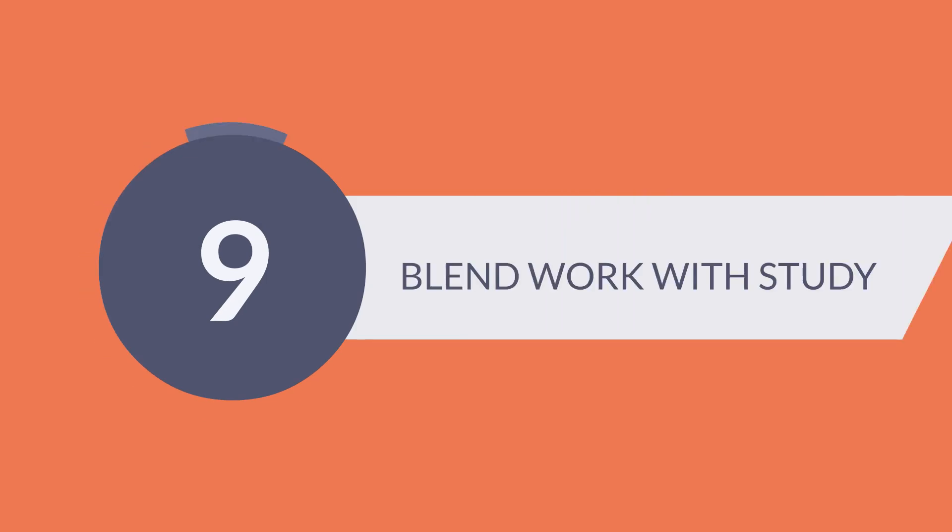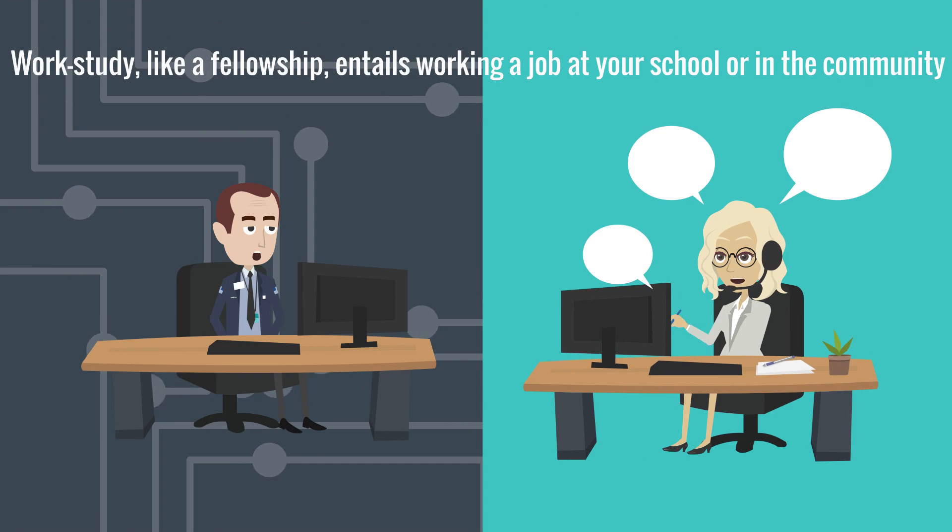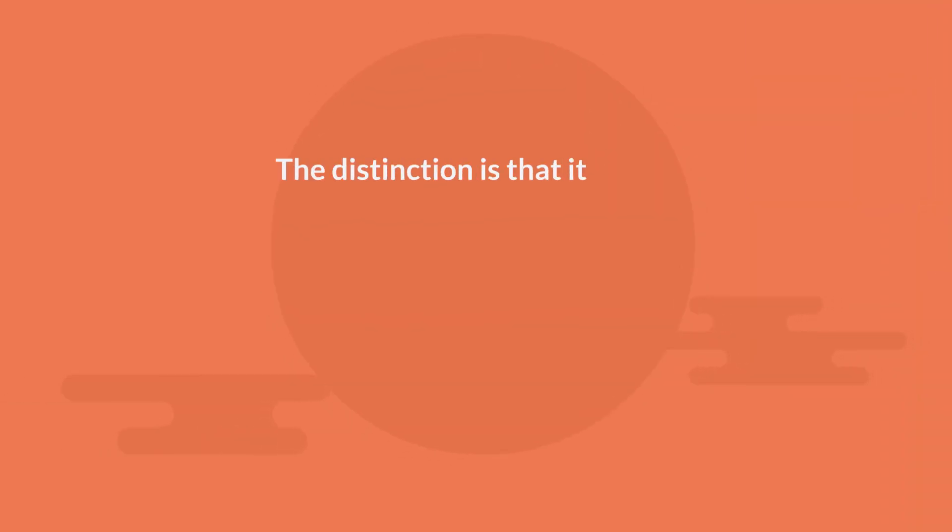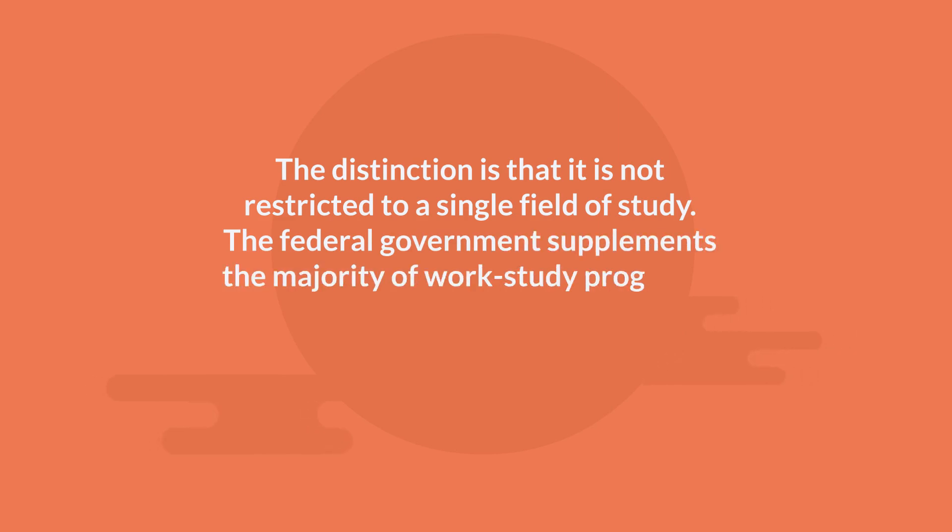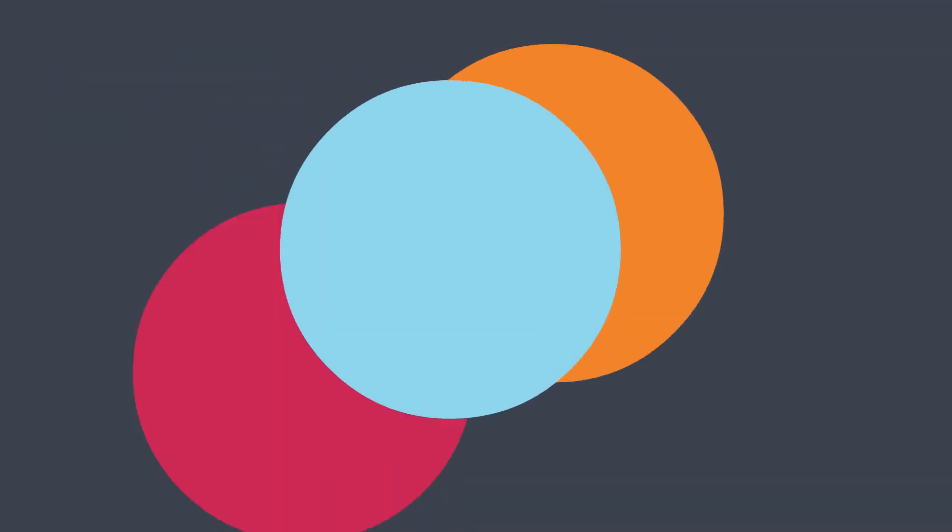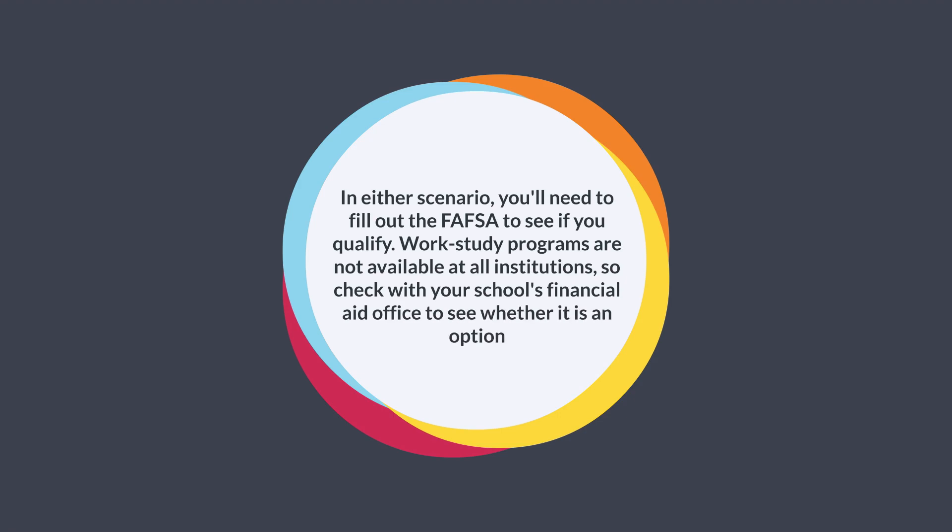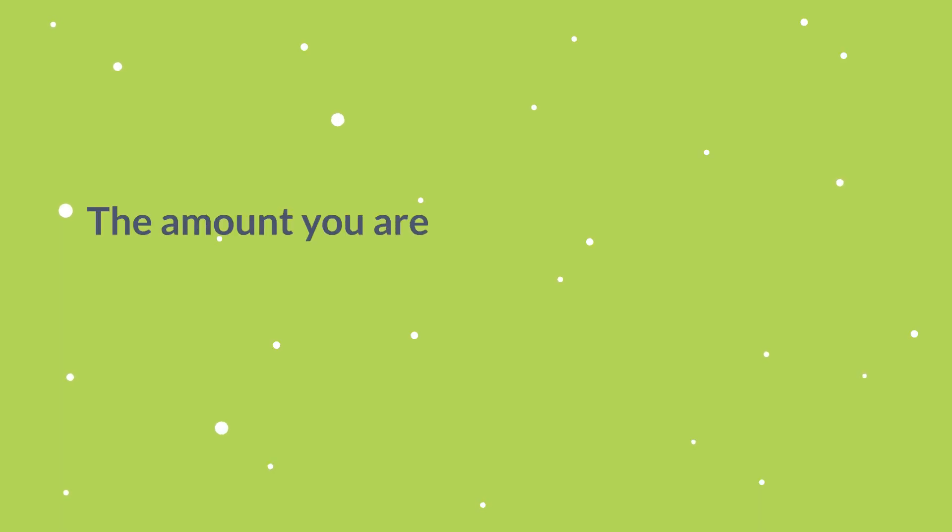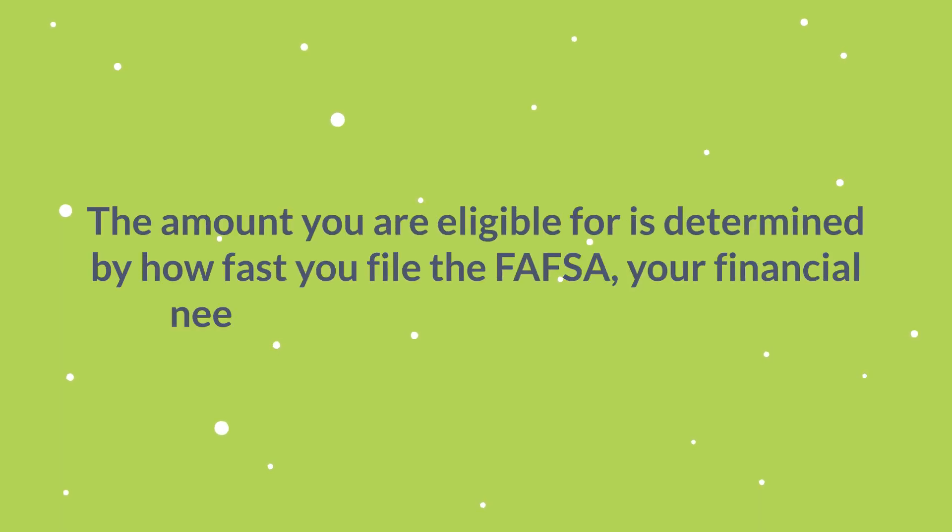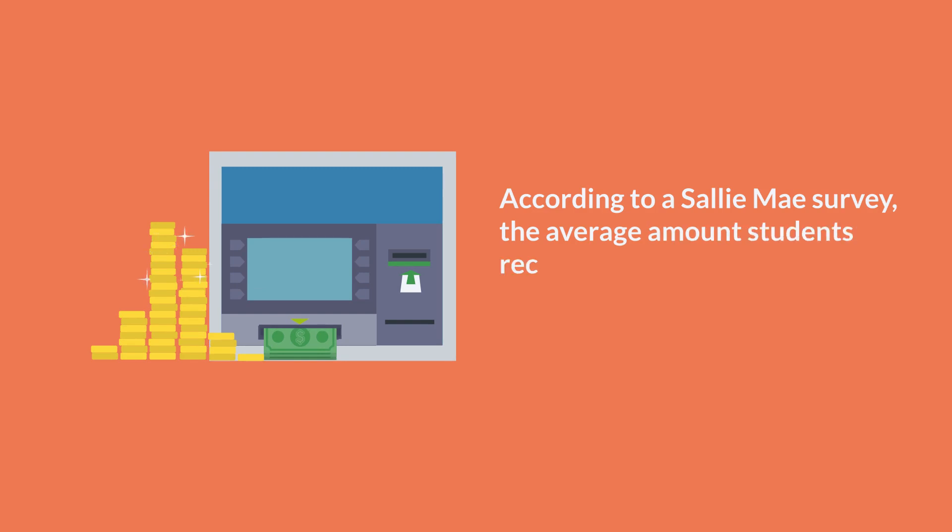9. Blend Work With Study. Work-study, like a fellowship, entails working a job at your school or in the community. The distinction is that it is not restricted to a single field of study. The federal government supplements the majority of work-study programs. However, some states also finance similar programs. In either scenario, you'll need to fill out the FAFSA to see if you qualify. Work-study programs are not available at all institutions, so check with your school's financial aid office to see whether it's an option. The amount you are eligible for is determined by how fast you file the FAFSA, your financial need, and the institution you attend. According to a Sallie Mae survey, the average amount students received through the federal work-study program in 2016 was $2,469.